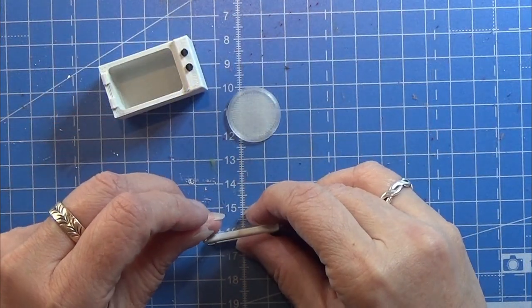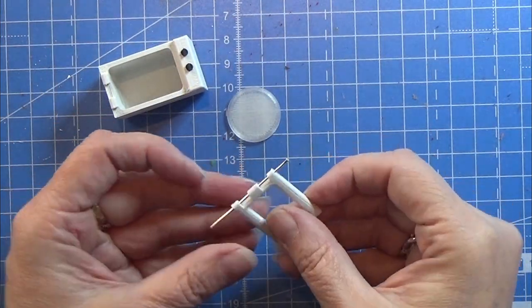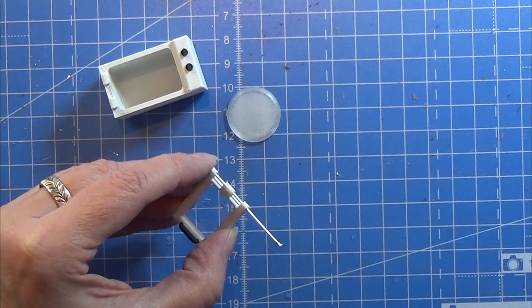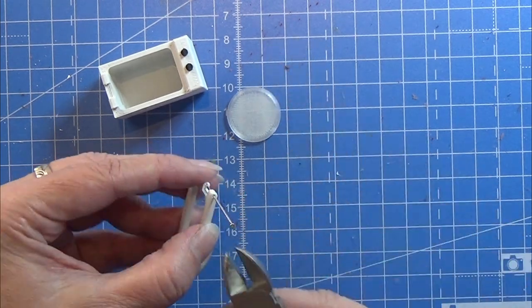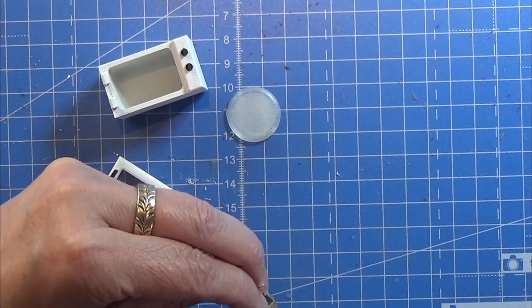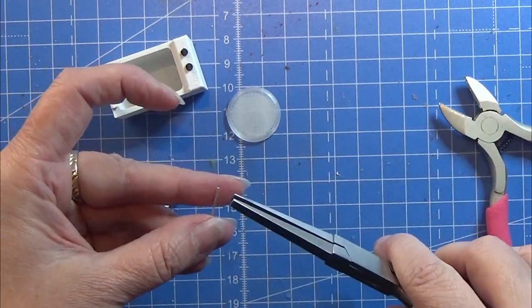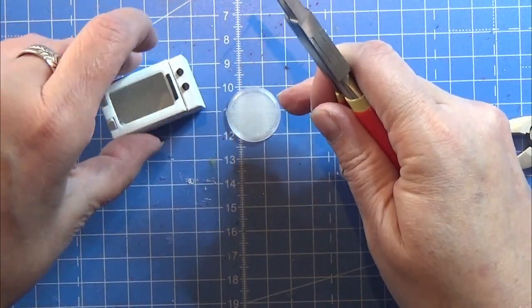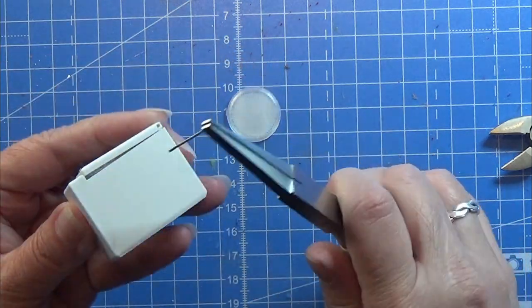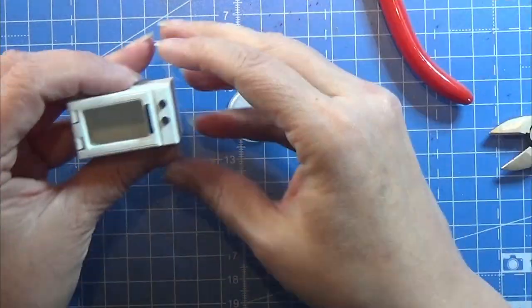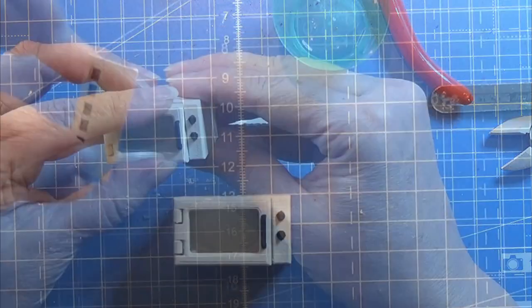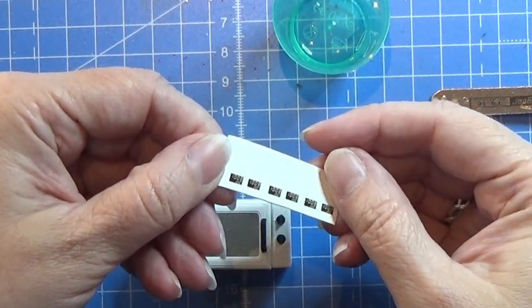Then I am going to take an eye pin that fits perfect in the little holes here. And I am cutting that off in the right length so it's kind of disappearing in the little microwave here. Placing it and then just sliding it through the holes. If it's not sitting right in there you can always give it a tiny bit of glue.